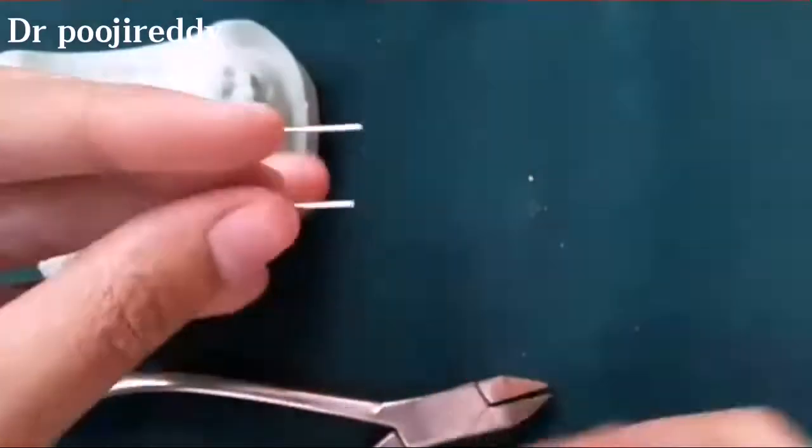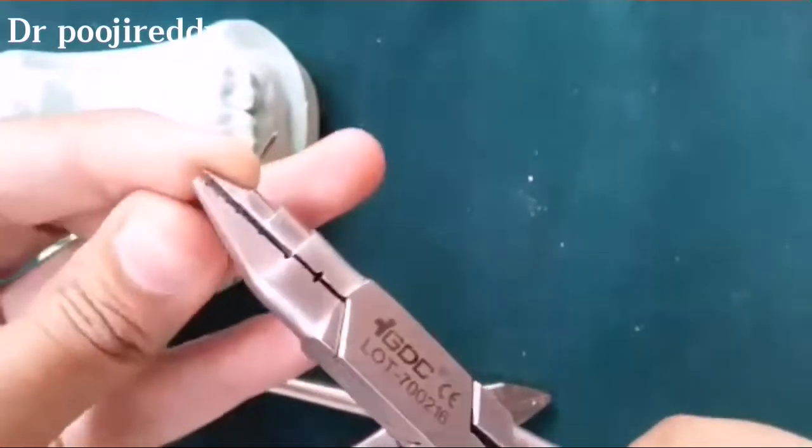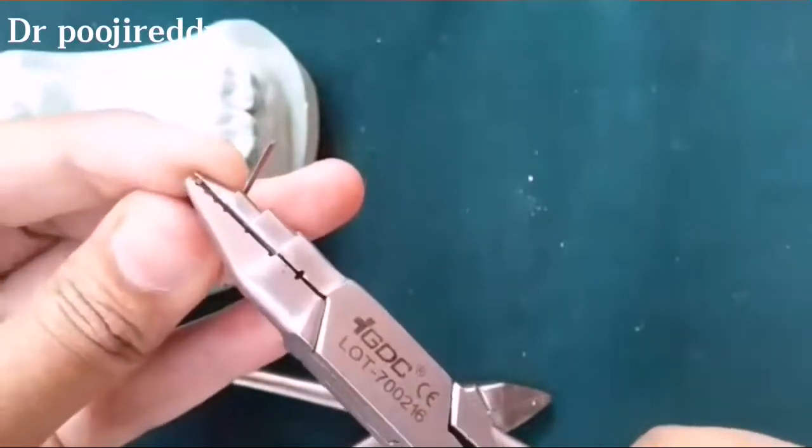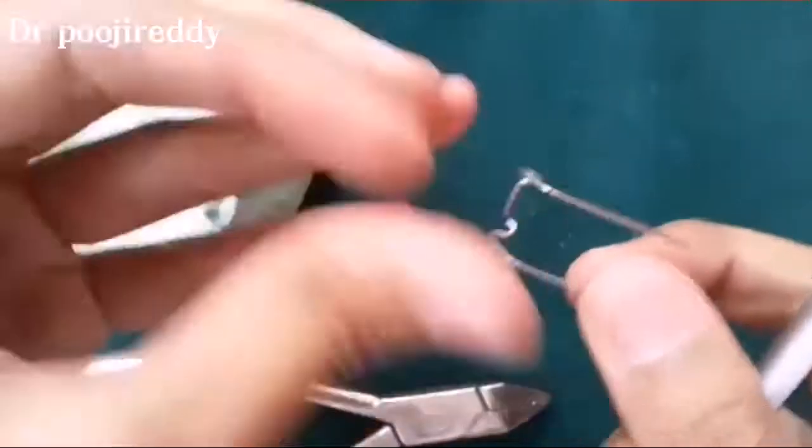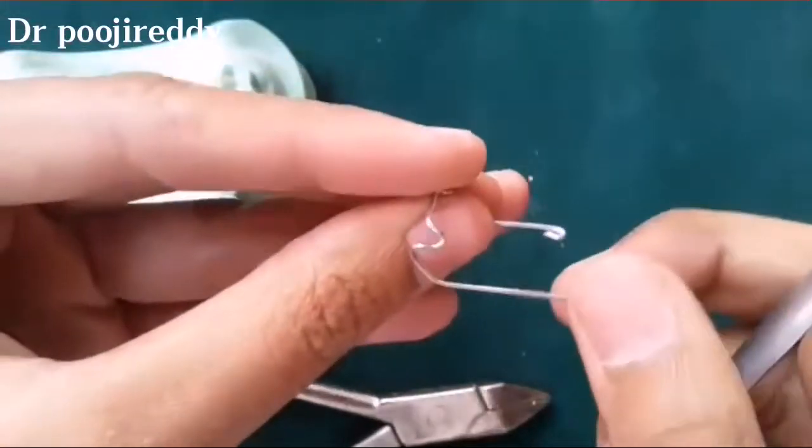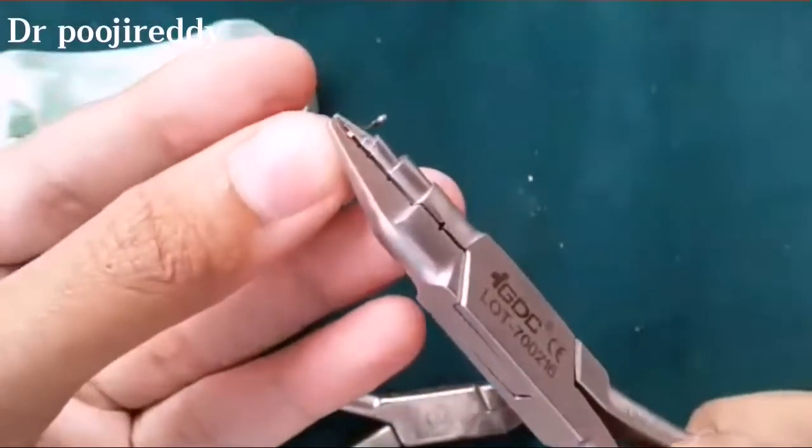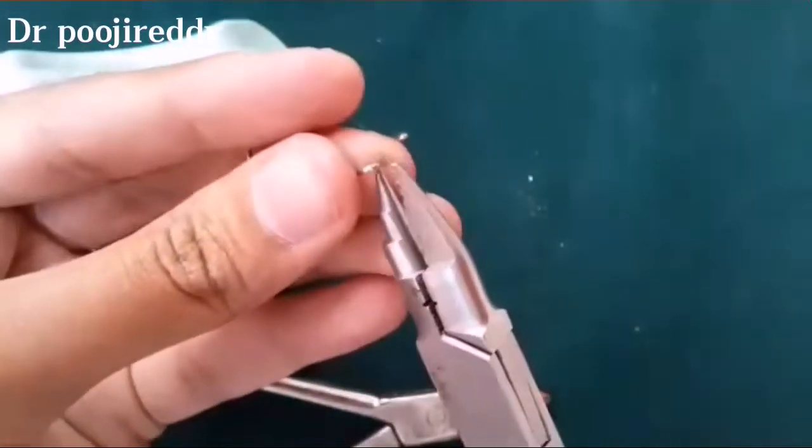And after the proper adaptation of the tag arm and the Adams clasp to the cast, start closing the retentive arm's tip. Close in the retentive arm tip so that it doesn't hurt the hard tissue or palate. Usually the retentive arm or tag arm goes into acrylic when we are fabricating any removable appliance.